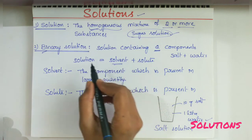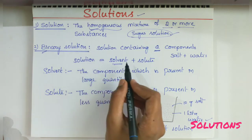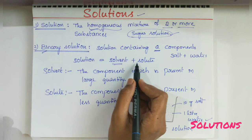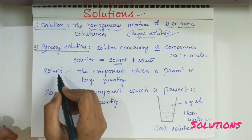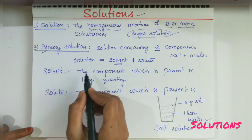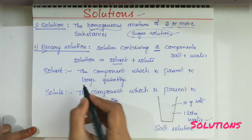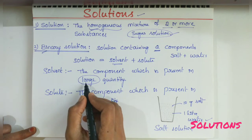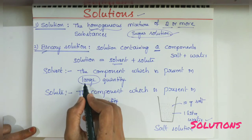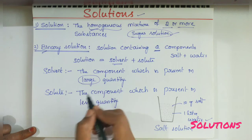Next, how can we prepare a solution? By mixing solute with solvent we get a solution. So what is solvent and solute? Take, for example, a sugar solution. Solvent means the component which is present in large quantity. The component which is present in large quantity is called solvent.